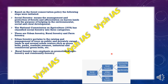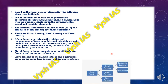Rural forestry deals with the promotion of agroforestry and community forestry. Agroforestry is a combination of agriculture and forestry — you grow crops as well as trees on the same land, inclusive of waste patches.